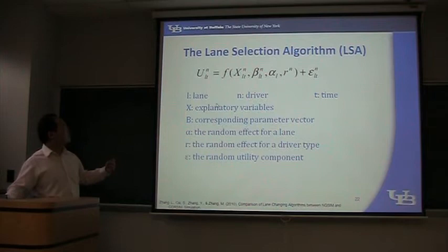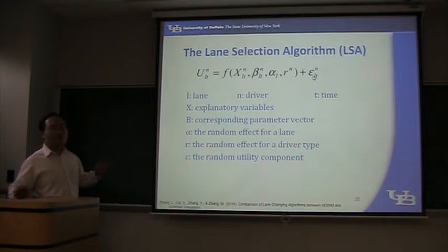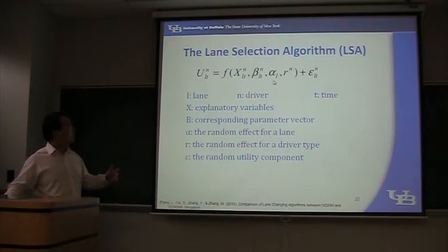It will be a function of some explanatory variables, parameters, and random effects. There are several random effects. Here, L means lane, N means driver, and G means time. So for example, this random utility component will follow a distribution — for example, a normal distribution — and it is different for each lane, each driver, and each different time point. And that makes the utility function. That's the general form.